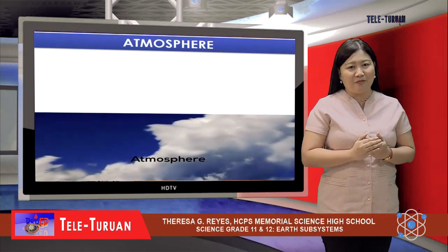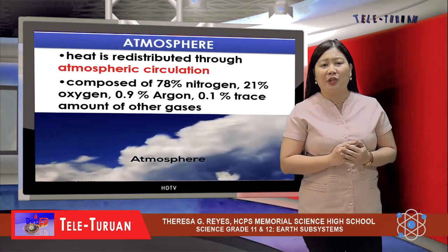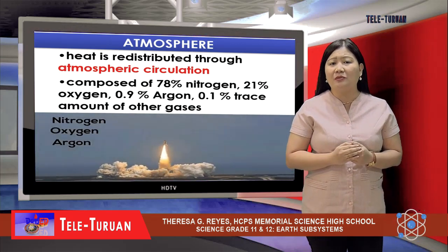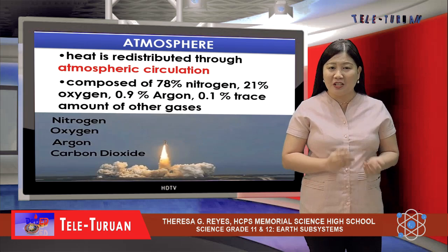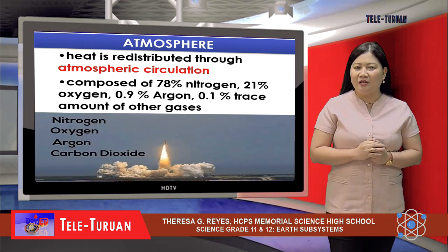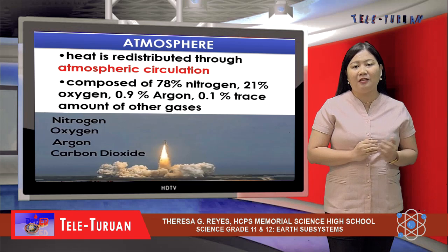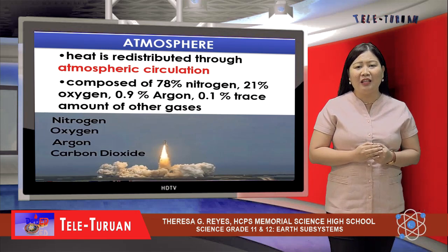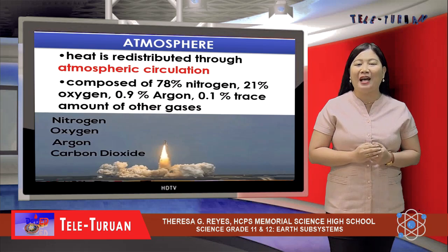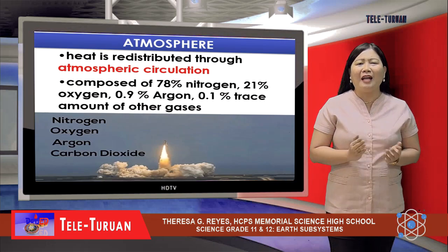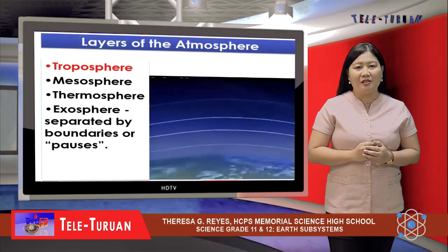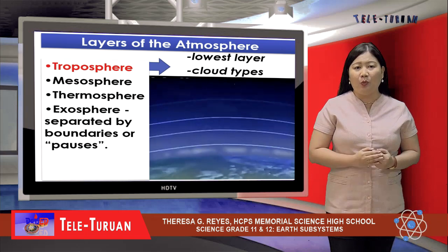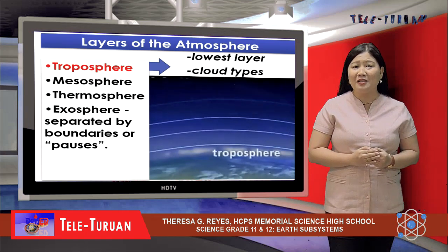Another subsystem is the atmosphere, a thin gaseous layer that envelopes the lithosphere, by which heat on Earth's surface is redistributed through atmospheric circulation. The present atmosphere is composed of 78% nitrogen, 21% oxygen, and less than 1% includes argon and trace amounts of other gases. The atmosphere is divided into layers — troposphere, mesosphere, thermosphere, and exosphere — which are separated by boundaries or pauses.